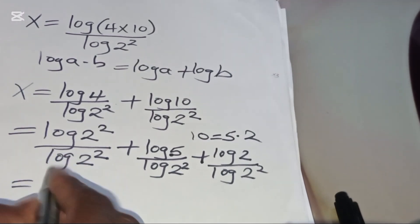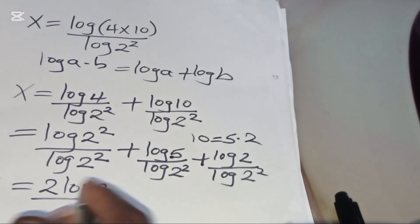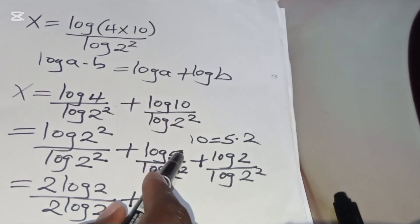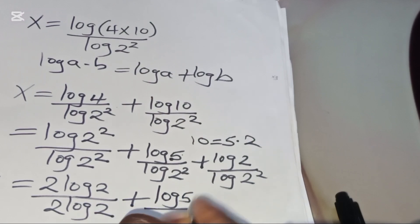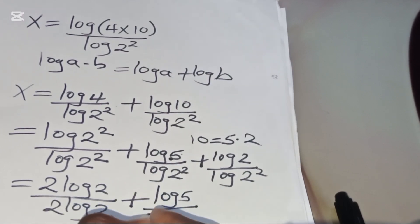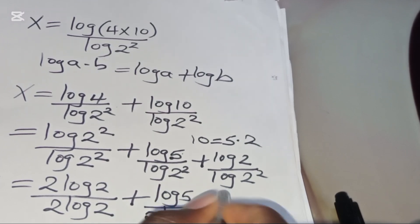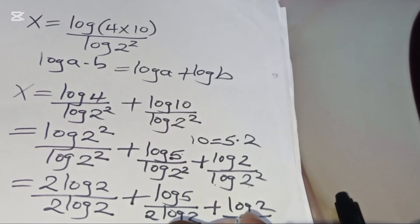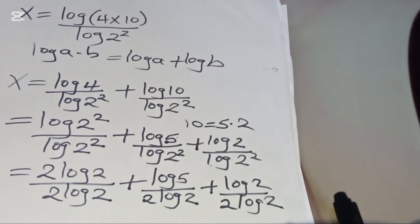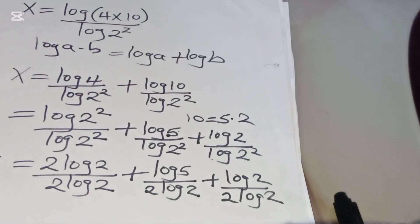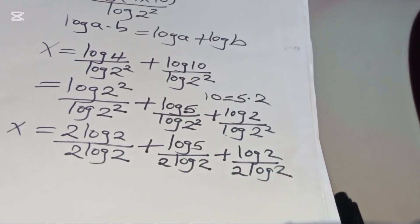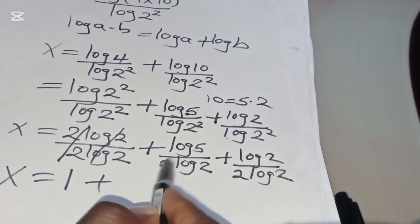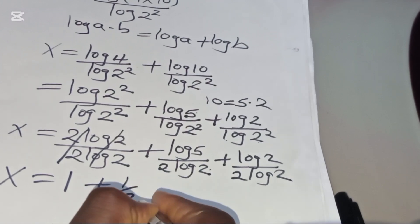log(2²) is expressed as 2·log(2). So we have 2·log(2) divided by 2·log(2), plus log(5) divided by 2·log(2), plus log(2) divided by 2·log(2). The first term 2·log(2) over 2·log(2) simplifies to 1. Then we have log(5) divided by 2·log(2), which is the same as ½·(log(5)/log(2)).